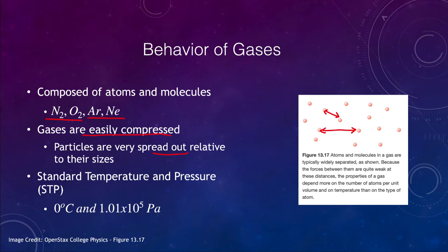We will talk sometimes about standard temperature and pressure called STP. Those are zero degrees Celsius and 1.01 times 10 to the fifth Pascal. If we say something is at standard temperature and pressure, we are giving you those two bits of information: the temperature is zero degrees Celsius and the pressure is 1.01 times 10 to the fifth Pascals.